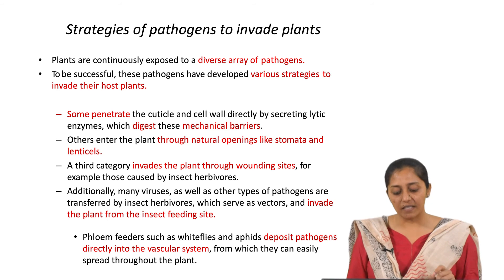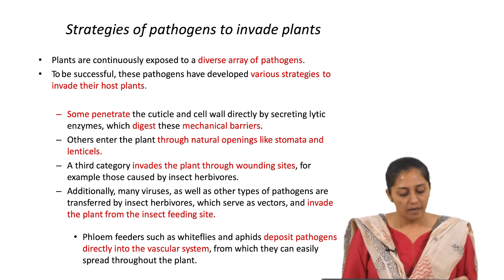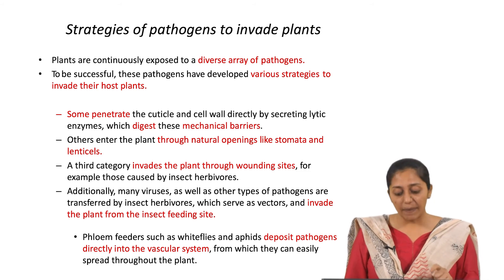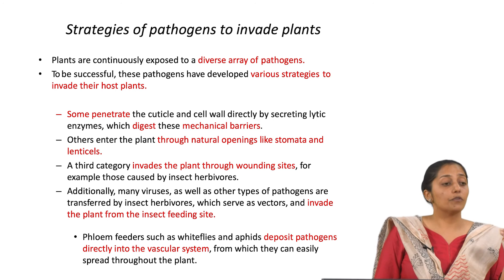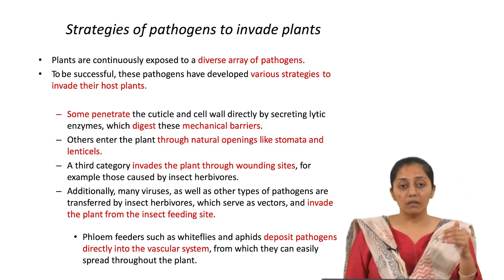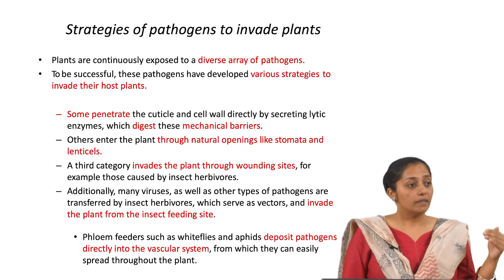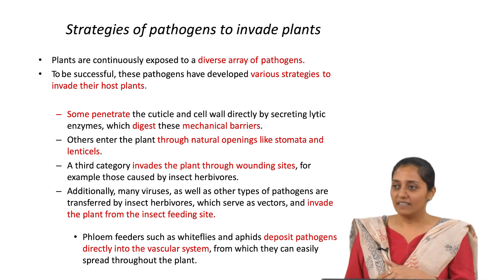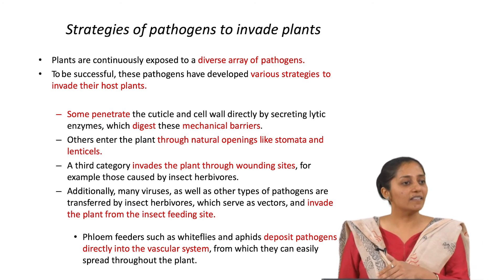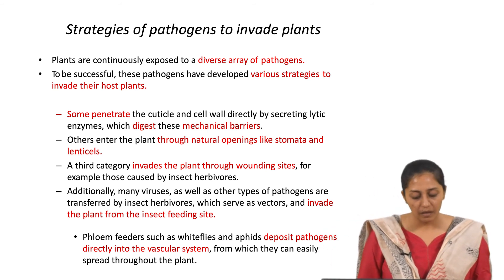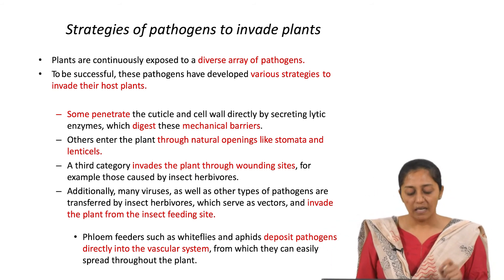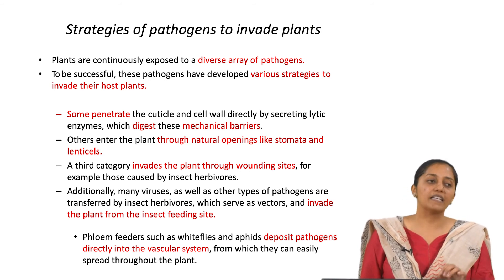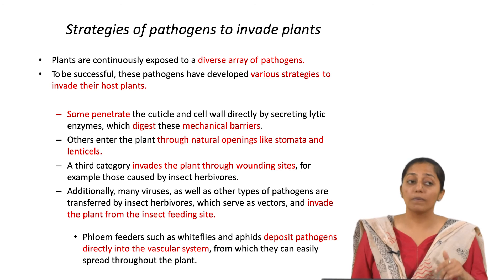A third category of pathogens invades through wounding sites, such as those caused by insect herbivores. Additionally, viruses may enter when insects pierce vascular bundles to obtain nutrients — while they feed, viruses enter and spread throughout the plant. Phloem feeders such as whiteflies and aphids deposit pathogens directly into the vascular system, from which they can be transmitted to the entire plant.